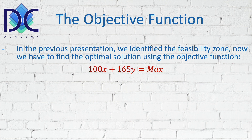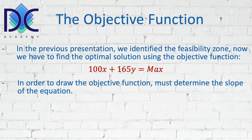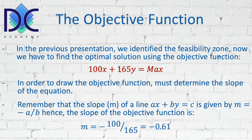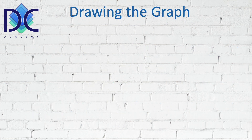Now we have to find the maximum of the objective function. To draw the objective function, we have to determine the slope of the equation. The slope m of a line ax plus by equals c is given by m equals minus a divided by b. So we can calculate the slope of the objective function as m equals minus 100 divided by 165, which is approximately minus 0.61.